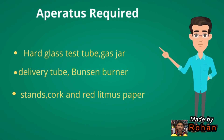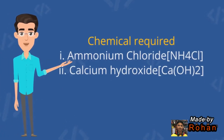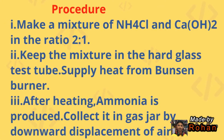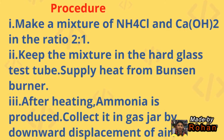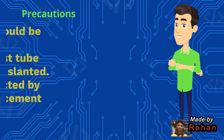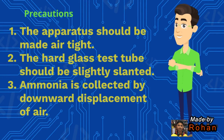Apparatus required: hard glass test tube, gas jar, delivery tube, Bunsen burner, stands, cork, and red litmus paper. Chemicals required: ammonium chloride (NH4Cl) and calcium hydroxide (Ca(OH)2). Procedure: make a mixture of NH4Cl and Ca(OH)2 in the ratio 2:1, keep the mixture in the hard glass test tube, and supply heat from a Bunsen burner.